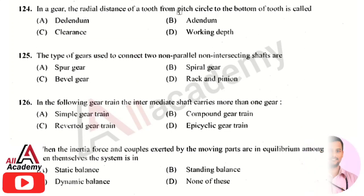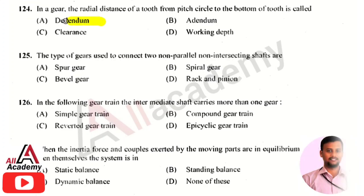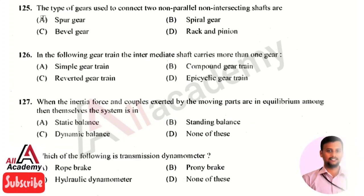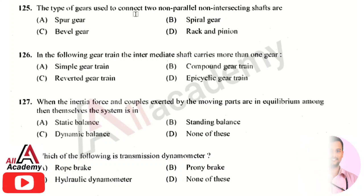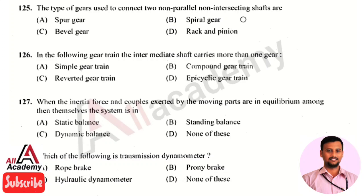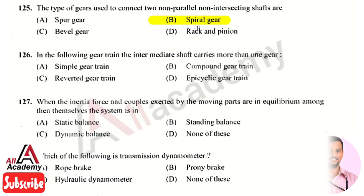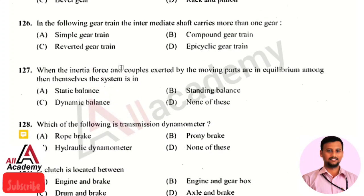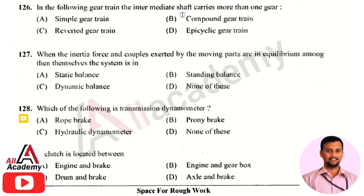In a gear, the radial distance of a tooth from the pitch circle to the bottom of the tooth is called the dedendum. The type of gear used to connect two non-parallel and non-intersecting shafts is the spiral gear, which connects two non-parallel and non-intersecting shafts.